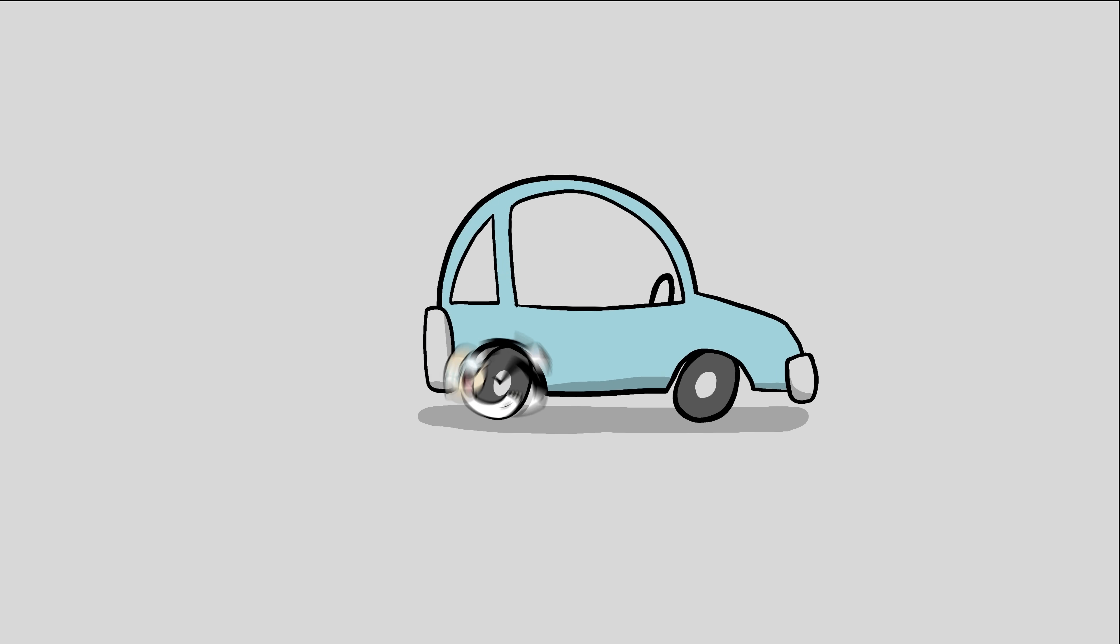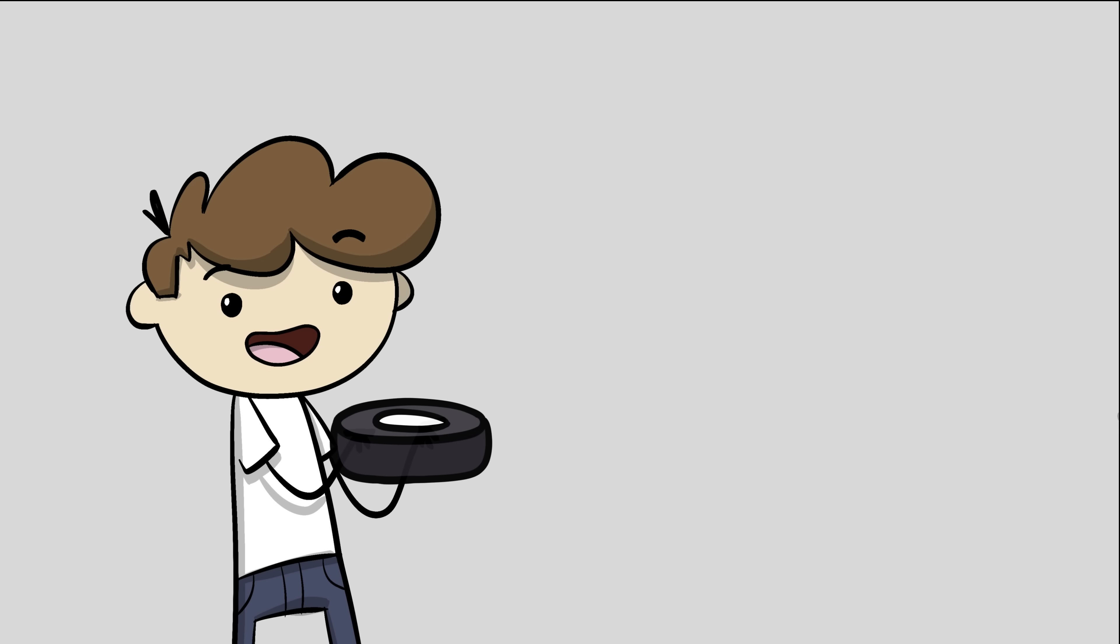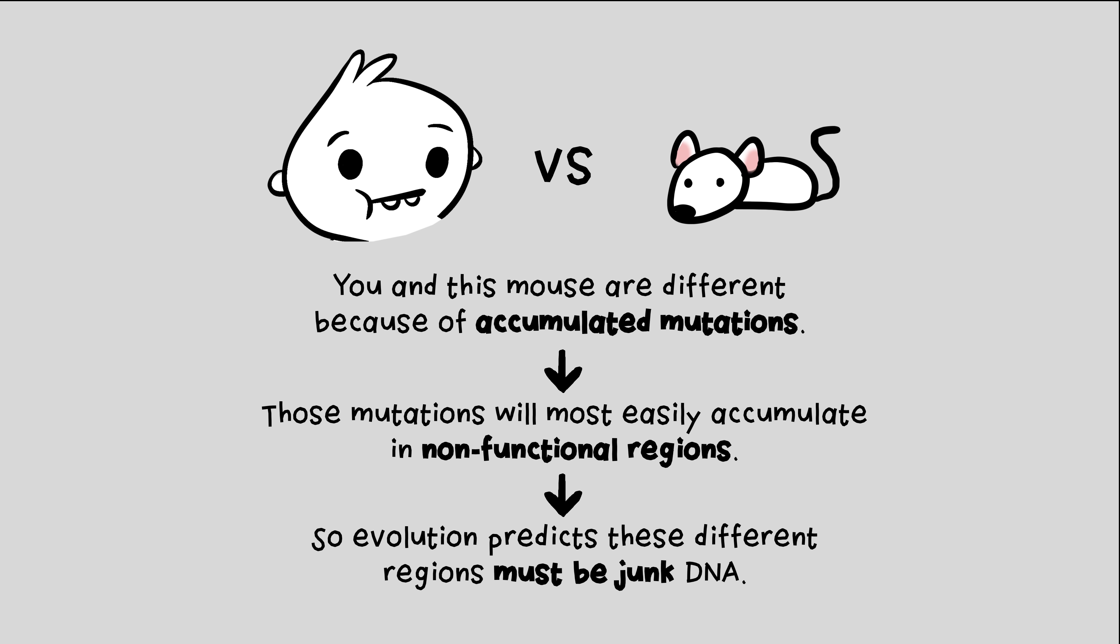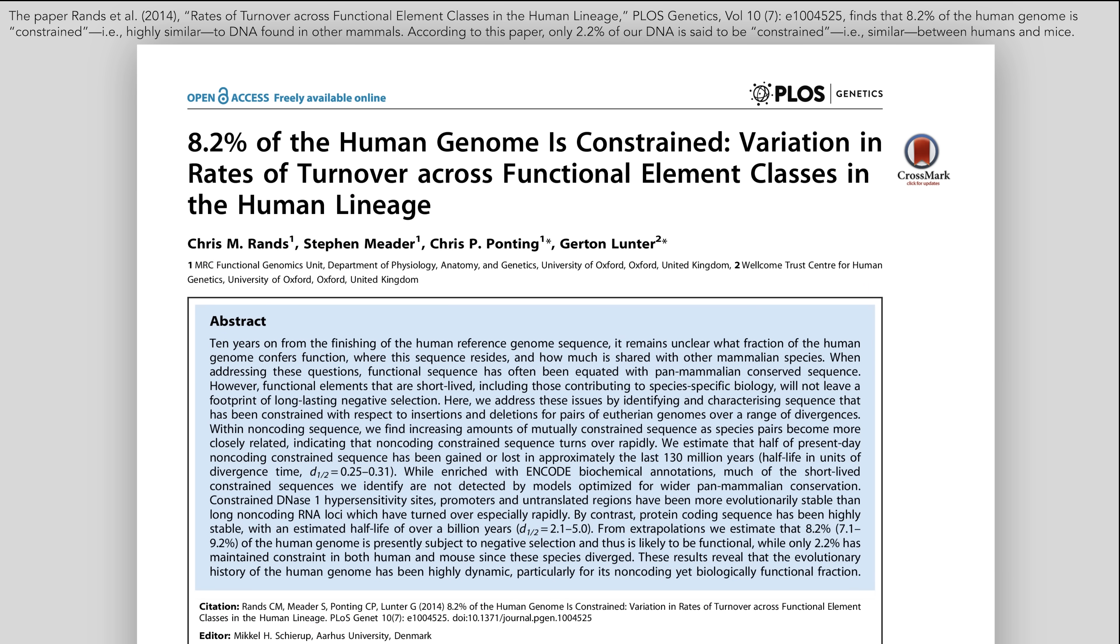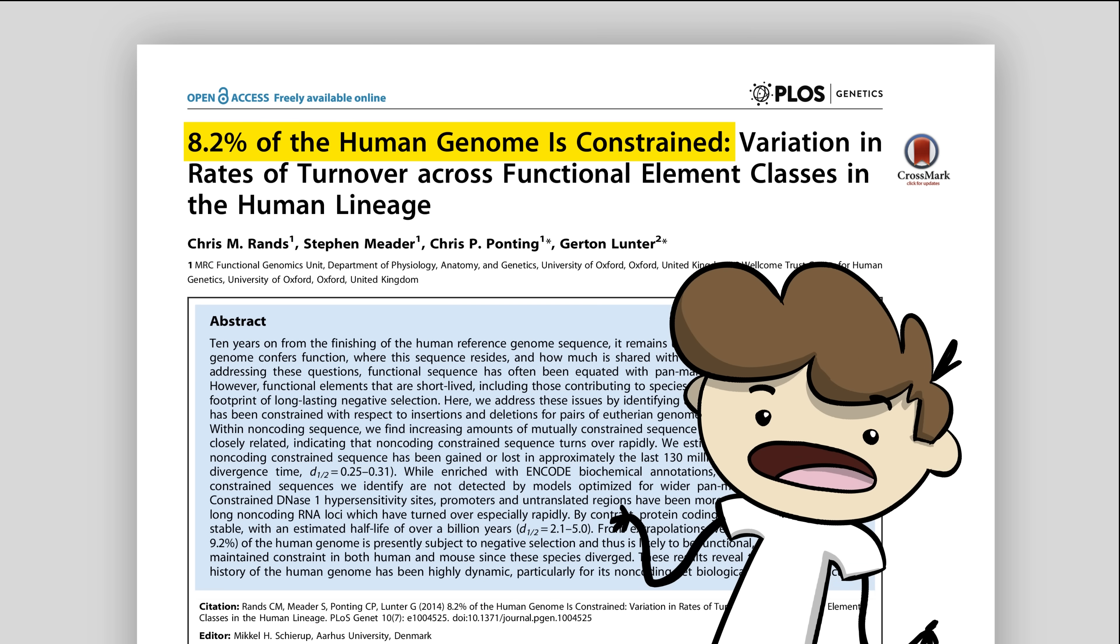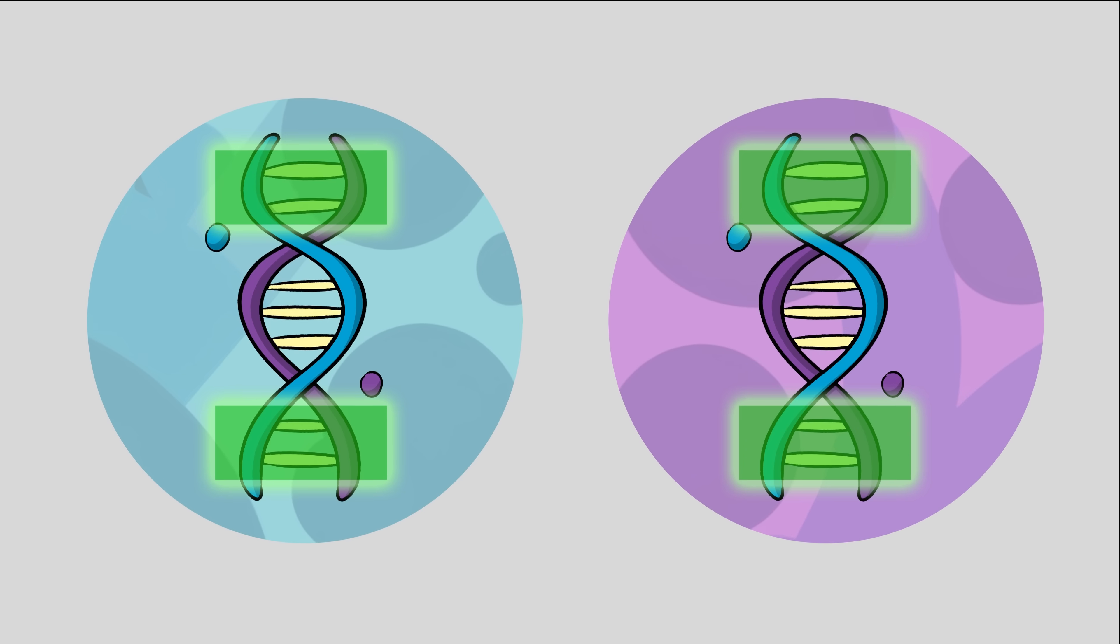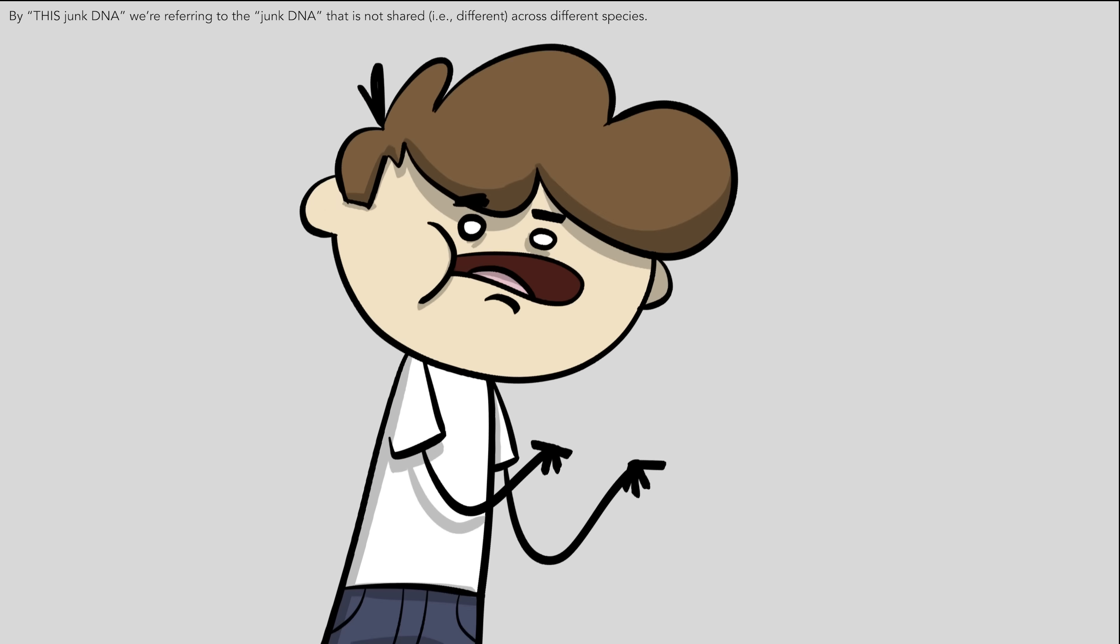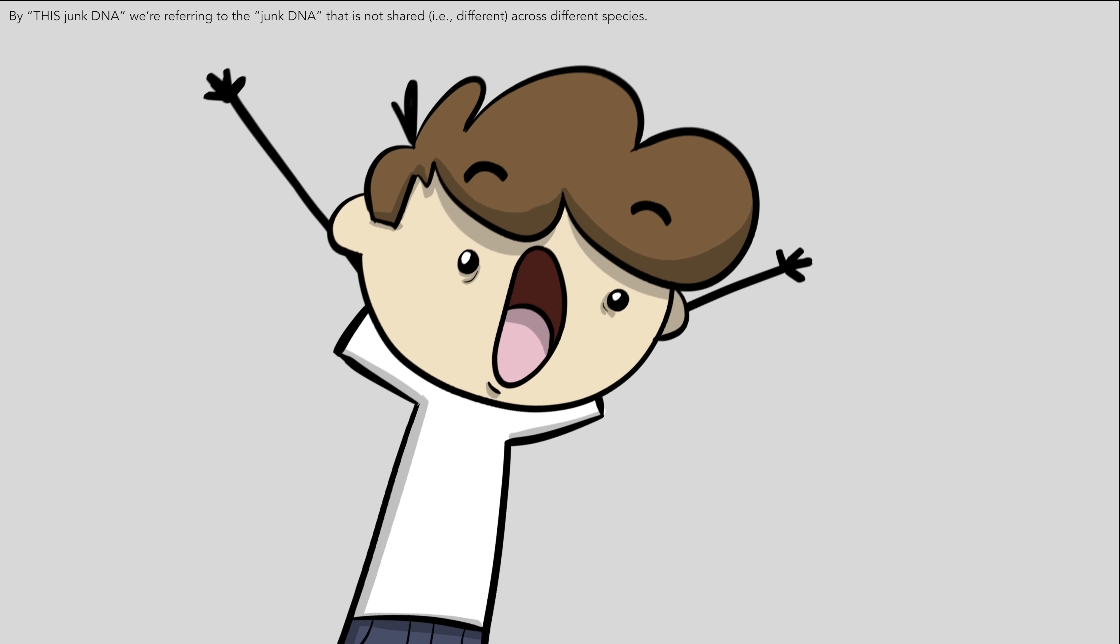But if the mutated genes are non-functional, if they're not currently in use, maybe like a spare tire, they could be tinkered with more safely. So the argument goes like this. You and this mouse are different because of accumulated mutations. Those mutations will most easily accumulate in non-functional regions. So evolution predicts that these different regions must be junk DNA. A 2014 paper used this reasoning to claim that only 8.2% of human DNA is functional. Because that's the amount of DNA that's similar between humans and other mammals. But do you see the problem? If only the common bits of DNA are functional, why would a mouse be a mouse and not you? So some of this junk DNA has to be functional, torpedoing their entire logic.